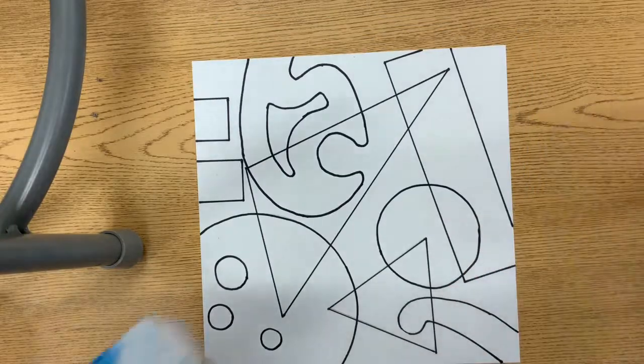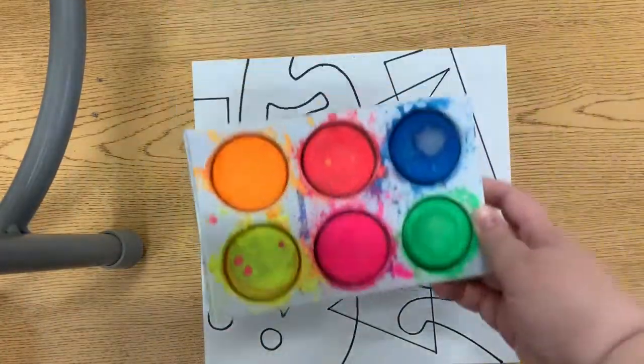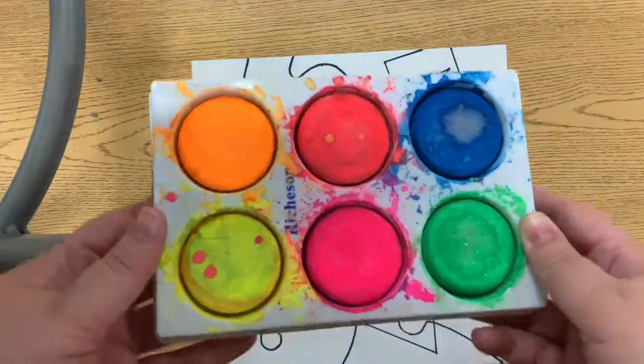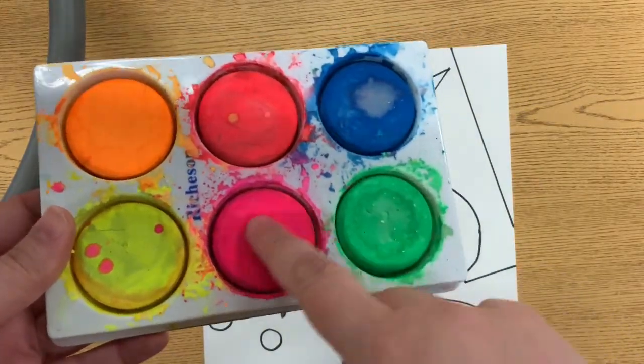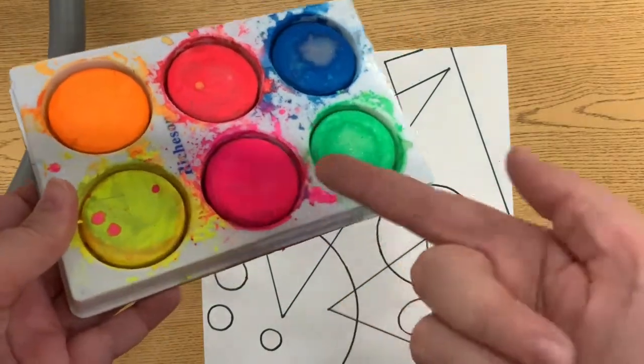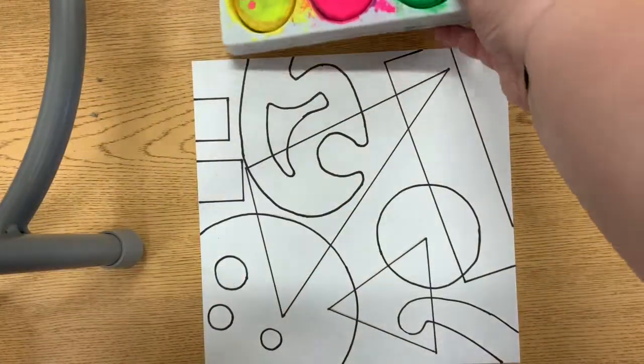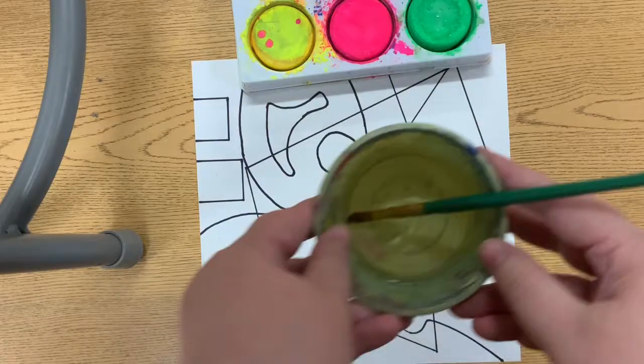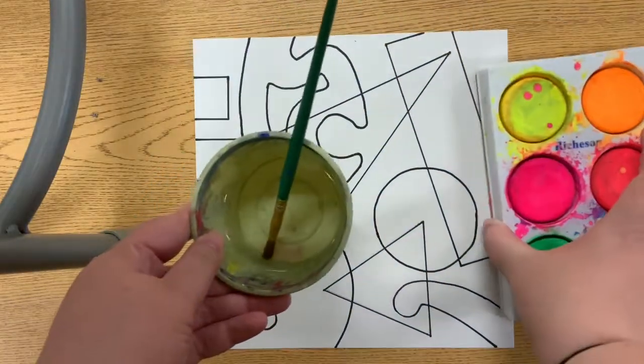For our final step, we're going to add color using tempera cakes. They're like watercolor but they have a little more pigment so they're more colorful. Right now they're dry - they need water to wake up. You'll need your tempera cakes and your water cup.